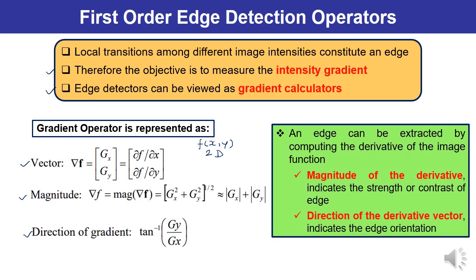An edge can be extracted by computing the derivative of the image function. The magnitude indicates the strength or contrast of the edge, while the direction of the derivative vector indicates the edge orientation. Both magnitude and direction are required for edge detection.